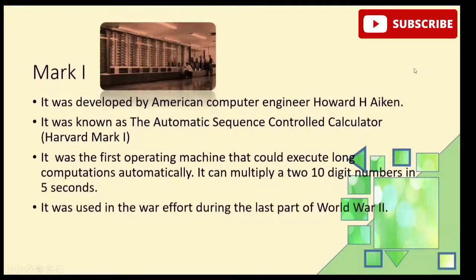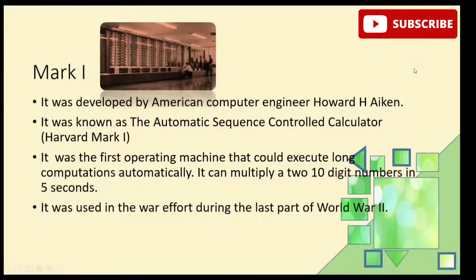After the Hollerith Tabulating Machine, the next device is Harvard Mark 1. This machine was developed by American computer engineer Howard H. Aiken. It is known as the Automatic Sequence Controlled Calculator, or Harvard Mark 1. It was the first functional machine to perform long calculations automatically. It could multiply two 10-digit numbers within 5 seconds. Harvard Mark 1 is also an electromechanical calculating device.